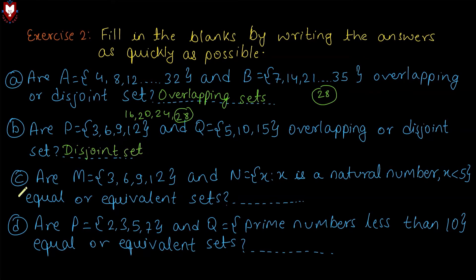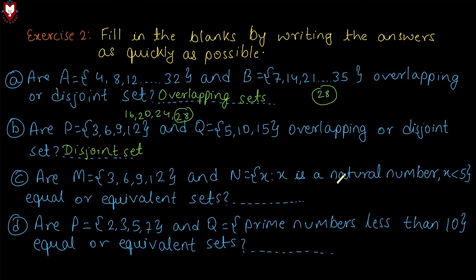Question number C: set M equals to 3, 6, 9, 12, and set N equals to X such that X is a natural number and X is less than 5. Are they equal or equivalent sets? Set M is given in roster form. Set N is described in set-builder or rule method, so we need to convert it.